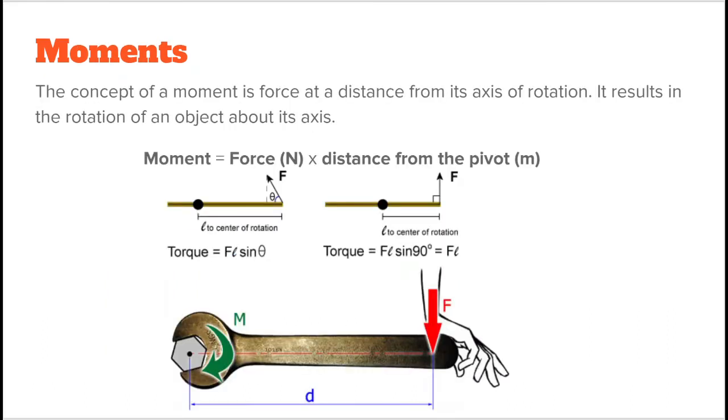This brings us to the concept of a moment, which is the force at a distance from its axis of rotation. It results in the rotation of an object about its axis. A moment is the cross product between its force and distance from the pivot, where the bold lettering means that the quantity is a vector, which has both magnitude and direction. Moments are sometimes called torques.